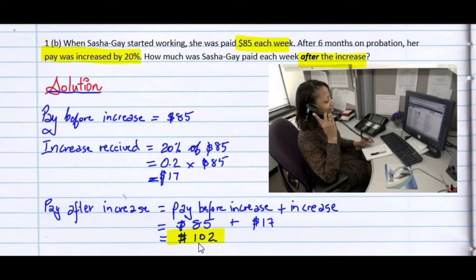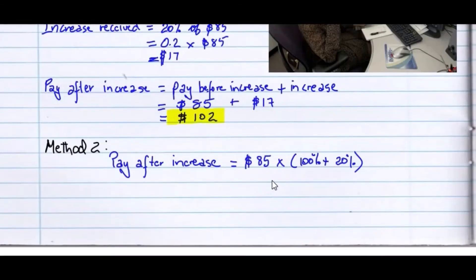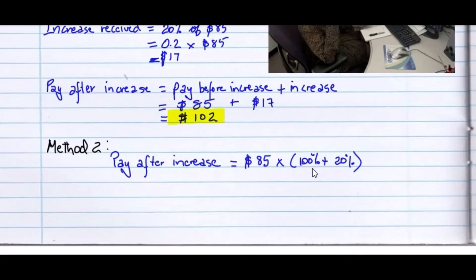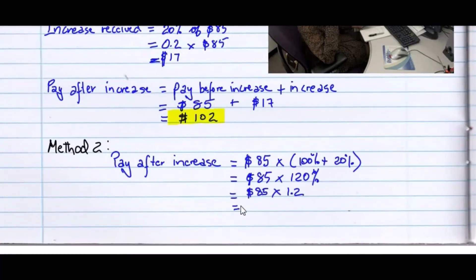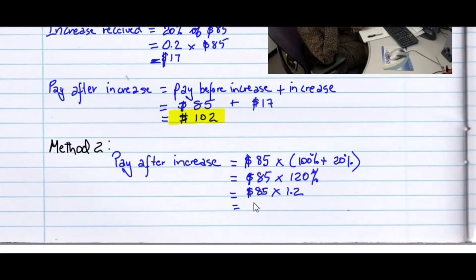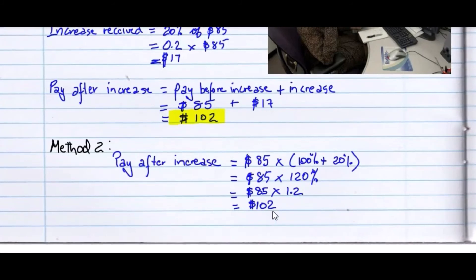We could calculate this much faster using a simpler method. This simpler method involves looking at the pay before the increase, which is actually 100%, and the increase, which is 20%. With this method, we have 100% plus 20% in the bracket. We can put this straight into your calculator: 85 times 120%. Move the decimal point two places to the left, since we're dividing 120 by 100, and so that gives us $102 as the pay after increase. This includes the pay before the increase, as well as the increase.